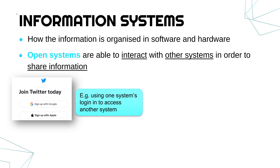To give a couple of clear examples: here is a snippet of Twitter where you can sign up. They let you sign up using your email address, but they also allow you to sign up using Google and Apple. These are all separate companies, but Twitter have decided to use another system's login to access their system. That is an example of sharing information because Google would have to receive some information and send some information to Twitter, and they operate different systems.